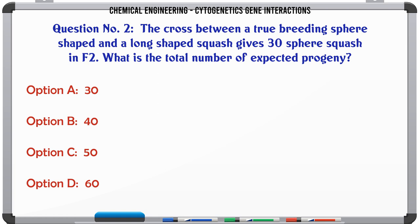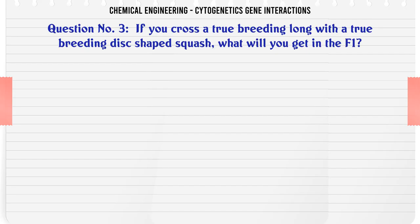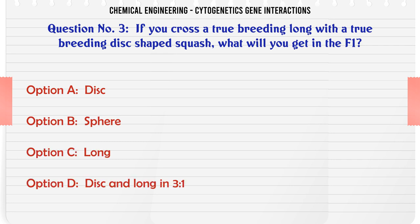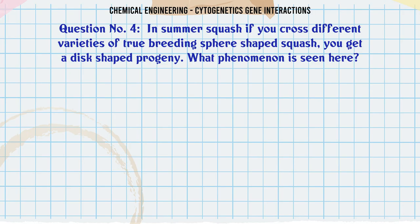If you cross a true breeding long with a true breeding disc-shaped squash, what will you get in the F1? A. Disc, B. Sphere, C. Long, D. Disc and long in 3:1. The correct answer is Disc.